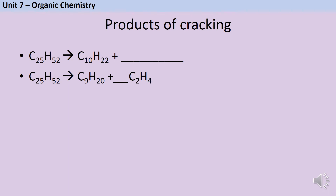In my first example, the reactant is C₂₅H₅₂, so the products must still have 25 carbon atoms and 52 hydrogen atoms. If I take away the 10 carbons and 22 hydrogens in decane, my second product must contain 15 carbons and 30 hydrogens. In the second style of question I'm given both products but need to work out how many ethene molecules there are. If I have nine carbons in nonane, then 16 must be in the second product, and since each ethene molecule contains two carbons, I must have eight of them.